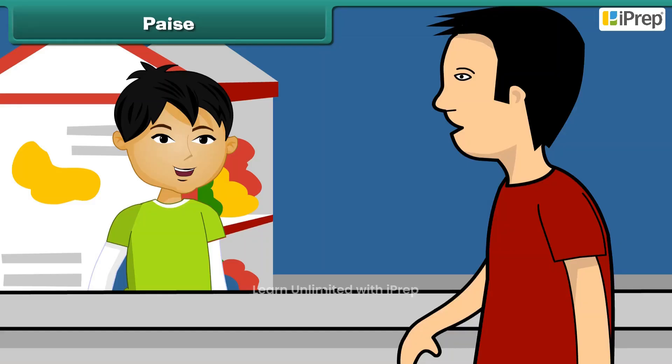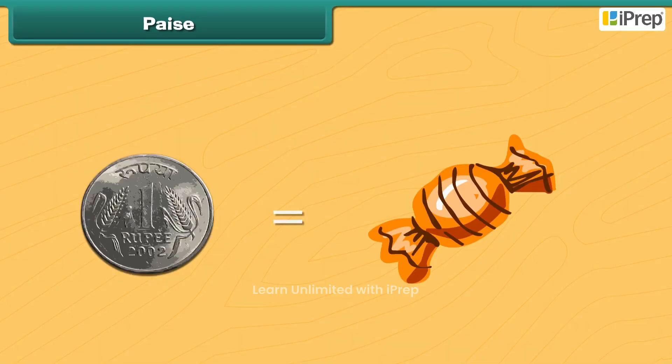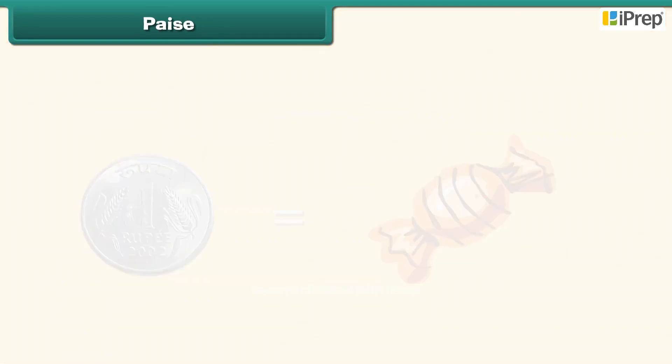Rahul purchased 1 toffee for 1 rupee. How will you convert this rupee into paise? 100 paise makes 1 rupee.